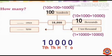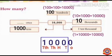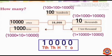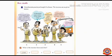Next, how many 10s are there in 10,000? Yes, 1,000 tens are there in 10,000 — that is, 1,000 × 10 = 10,000. Next, how many 1s are there in 10,000? Yes, 10,000 ones are there in 10,000 — that is, 10,000 × 1 = 10,000.